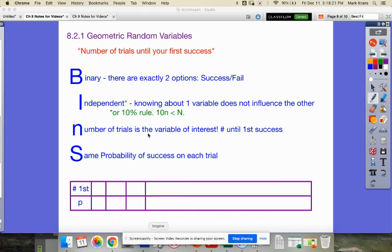We want to look at geometric random variables. And the phrasing for this is always the number of trials until your first success. So they're like binomial random variables, except for notice instead of bins with a capital N, I use a lower case n.